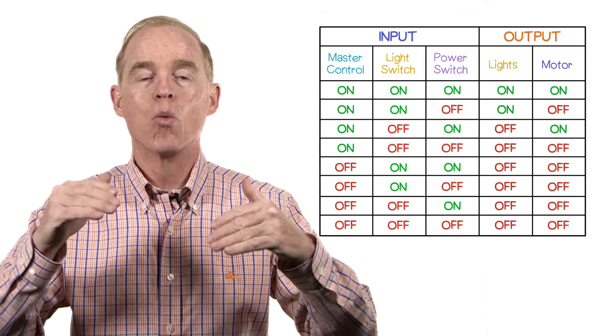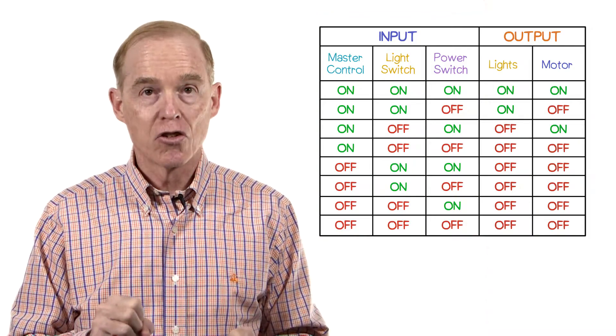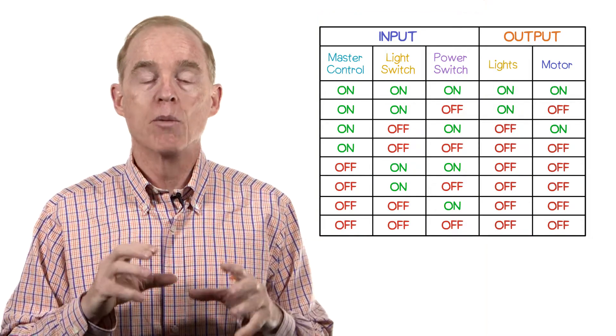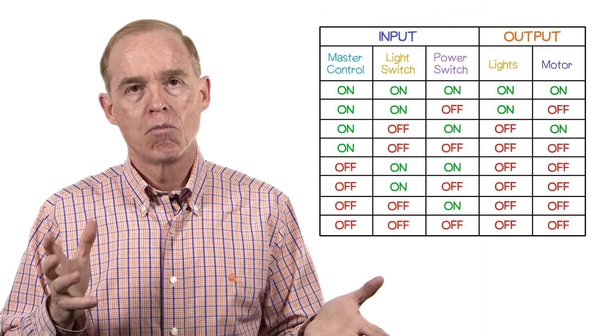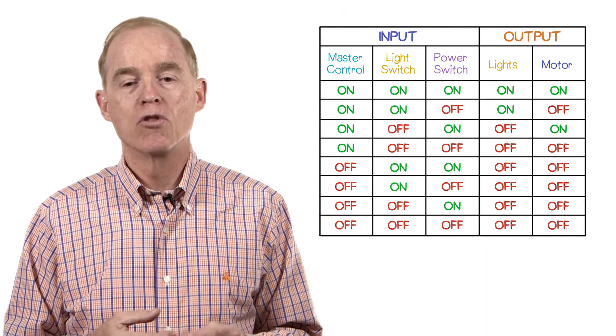Each of the rows corresponds to one of the possible combinations of values for the input switches. Two to the third, eight different rows there.